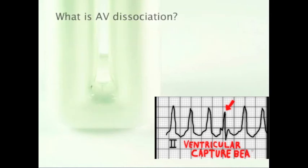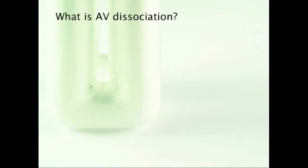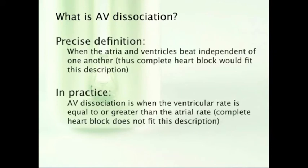What is AV dissociation, anyway? This may be an appropriate time to discuss the term because it can be somewhat confusing. Strictly speaking, AV dissociation occurs when the atria and ventricles beat independent of one another, and thus we could consider complete heart block to be a form of AV dissociation. In practice, however, AV dissociation usually refers to the situation in which the ventricular rate is equal to or greater than the atrial rate. And this event can never occur in complete heart block.